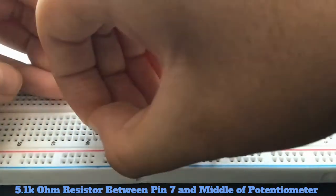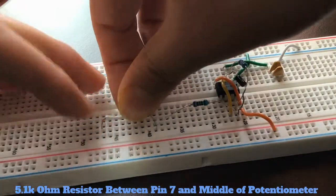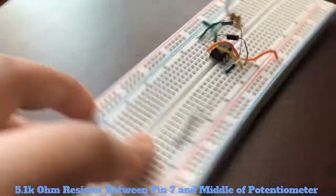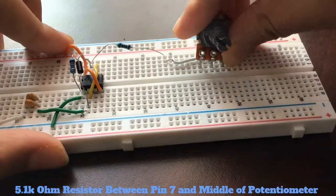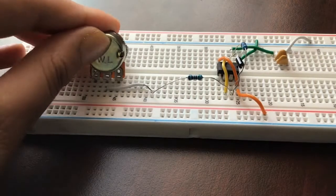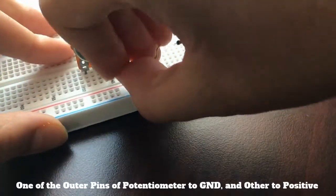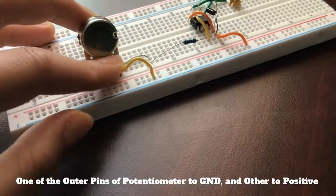Now connect a 5.1 kiloohm resistor to pin seven and somewhere else on the breadboard. Extend that and connect it to the middle pin of the potentiometer. With the potentiometer's other pins, connect them to the power of the breadboard - one to positive and one to negative.